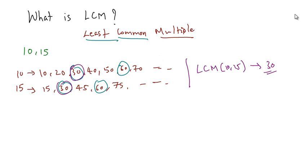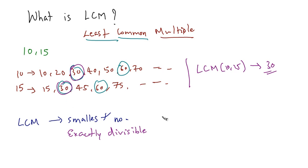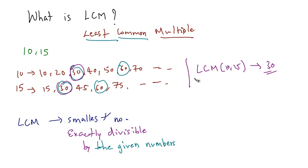That's going by the words, but the definition of LCM is that it is the smallest number which is exactly divisible by the given numbers. So that's basically the same thing — the smallest number exactly divisible by the given numbers. So 30 here is exactly divisible by both 10 and 15, so it's the LCM.